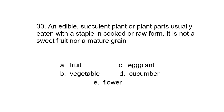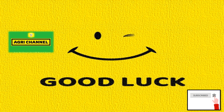Number 31: An edible succulent plant or plant parts usually eaten with a staple in cooked or raw form. It is not a sweet fruit nor a mature grain. Correct answer: vegetable. Good job! How many questions did you answer correctly? Comment down below!